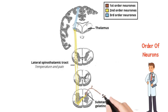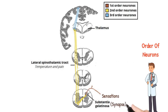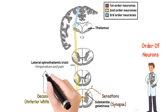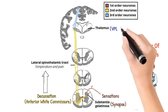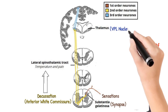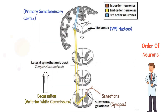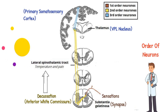Now we will discuss the order of neurons. First order neurons carry sensations through the dorsal root to the substantia gelatinosa, where a synapse occurs. Second order neurons originate, decussate immediately via the anterior white commissure, and ascend upwards as the lateral spinothalamic tract. These second order neurons terminate in the VPL nucleus of the thalamus. Third order neurons then ascend to the primary somatosensory cortex. Any lesion to the lateral spinothalamic tract will cause loss of pain and temperature sensations on the contralateral side. In the diagram, brown fibers show first order neurons, yellow fibers show second order neurons, and blue fibers show third order neurons.